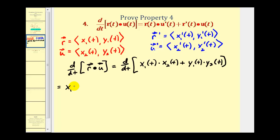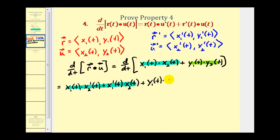To find the derivative of these two products we apply the product rule to each. The product rule gives us the first function x sub one of t multiplied by the derivative of the second, x sub two prime of t, plus the derivative of the first, x sub one prime of t, times the second, x sub two of t. Then for the y terms: plus y sub one of t times y sub two prime of t, plus y sub one prime of t times y sub two of t.